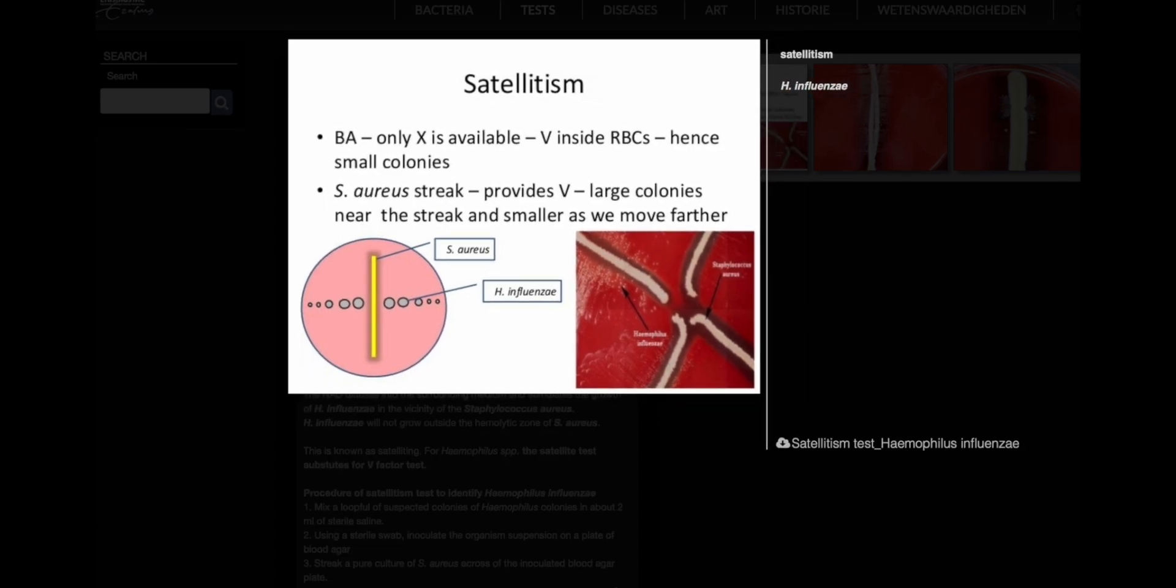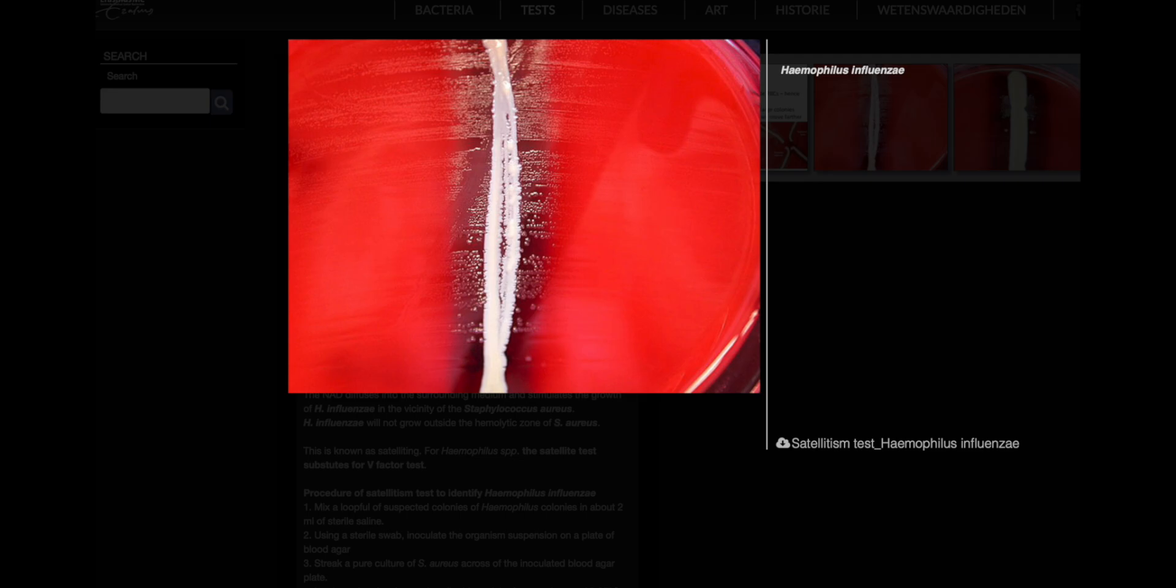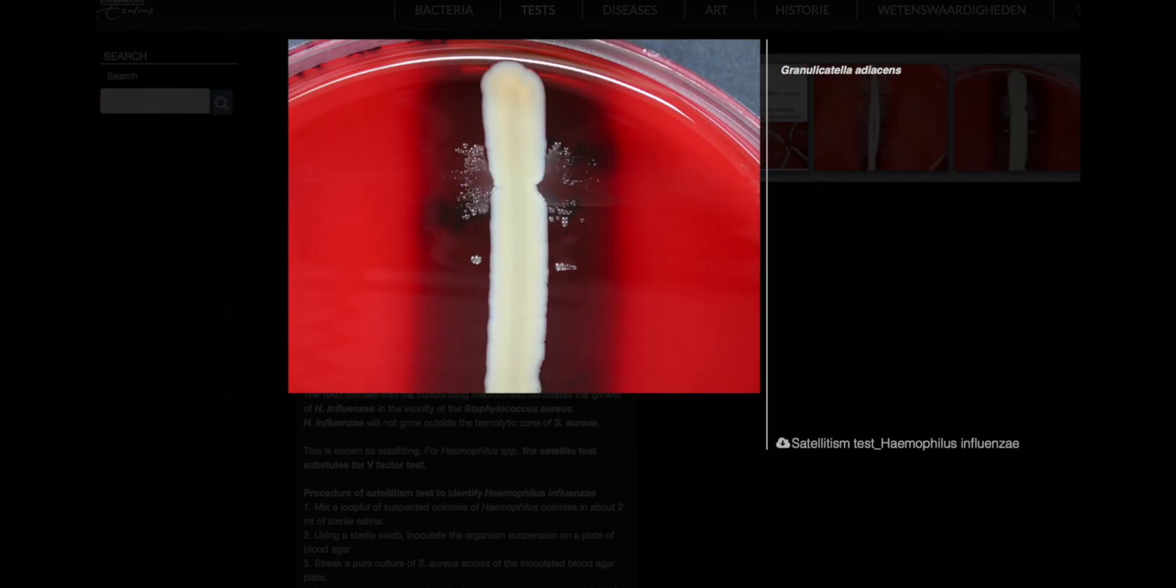Abiotrophia defectiva and Granulicatella adiacens can also exhibit satellitism around bacteria like Staphylococcus aureus. However, it is important to note that these species may show inconsistent satellite test results depending on the specific nutrients present in blood agar plates from different manufacturers.